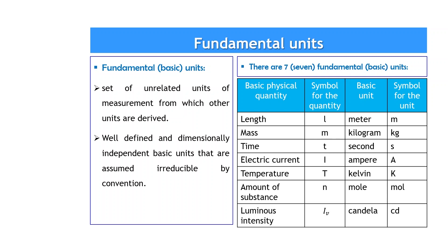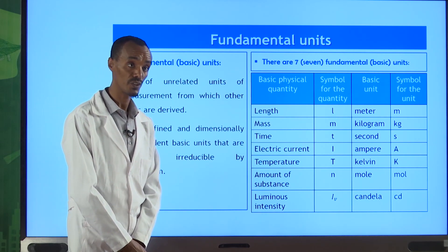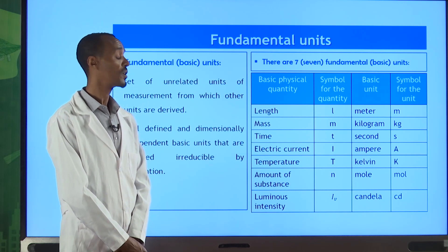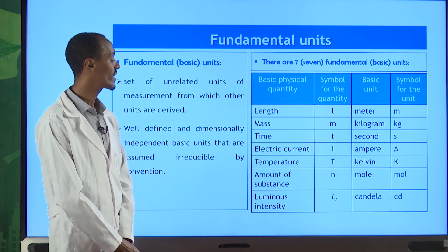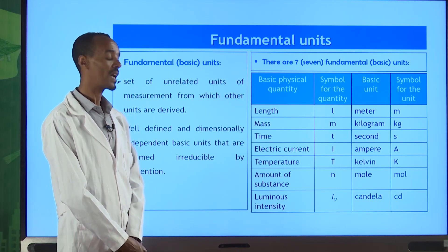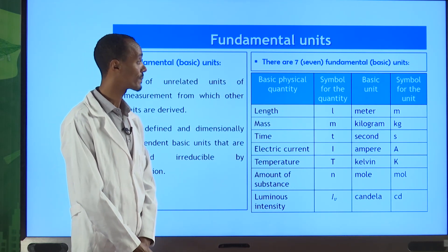There are seven basic or fundamental physical quantities. They are: length, mass, time, electric current, temperature, amount of substance, and luminous intensity. Their symbols are: length — small l, mass — m, time — t, electric current — I, temperature — capital T, amount of substance — small n, and luminous intensity — I sub v.